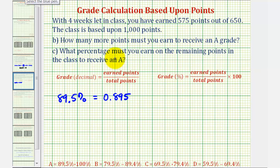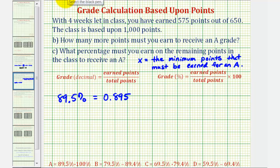We also have an unknown. That would be the number of points that we must earn to receive the A. So let's let x equal the minimum number of points that must be earned to receive an A. We can find the grade as a decimal by taking the earned points and dividing by the total points. But now the earned points consist of the unknown x and the points already earned. So we can set up an equation where x would be the points that we must earn to receive an A, plus the points earned, divided by the total points in the course, which would be 1,000. We want this to be equal to 0.895.